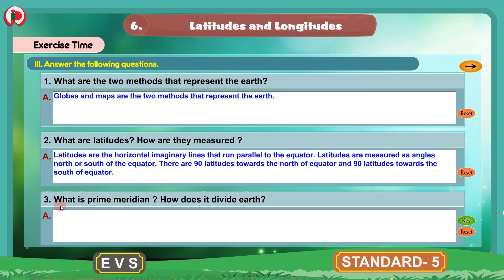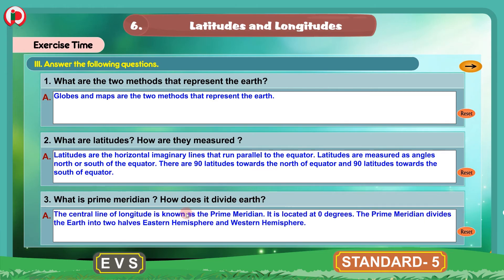And 90 latitudes towards the south of the equator. Question 3: What is prime meridian? How does it divide the earth? The central line of longitude is known as the prime meridian. It is located at 0 degrees. The prime meridian divides the earth into two halves: the Eastern hemisphere and the Western hemisphere. You can write these answers in the workbook.